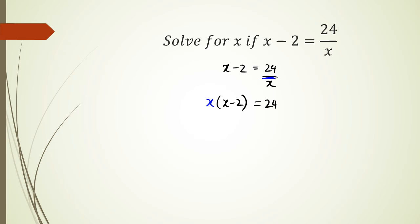So expanding this, x times x is x squared, x times negative 2 is negative 2x, and that equals to 24. Rearrange this, I'm going to get x squared minus 2x minus 24 equals 0. Because remember, any time you solve a quadratic, you've got to equal, you've got to make it equal 0 before you go on to solve it.